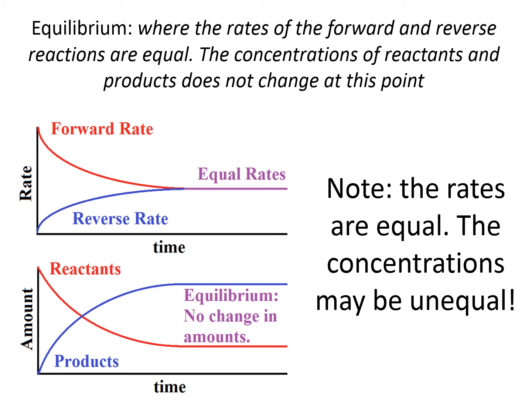However, at that point, they don't have to be equal. It doesn't mean that if you've got 50 grams of reactant, you've got 50 grams of product. It is a constant, but not necessarily equal.